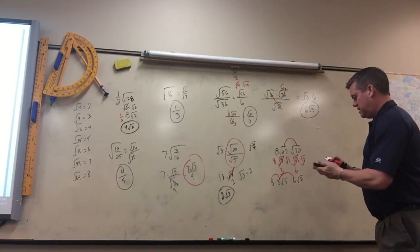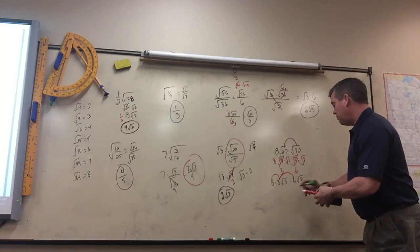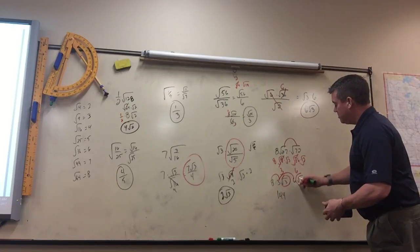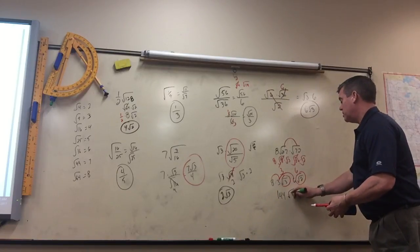24, 8 times 3 is 24, times 6 is 144. And then what do you get when you multiply that times that? Square root of 6.